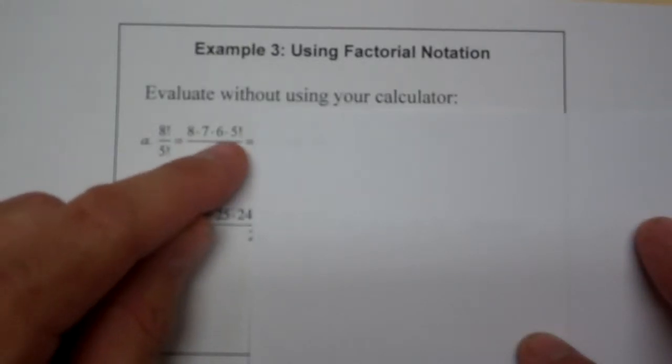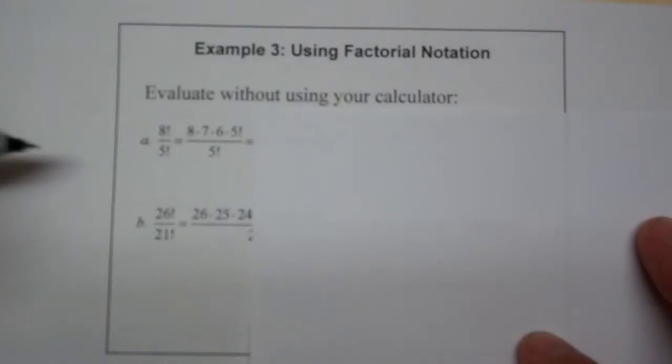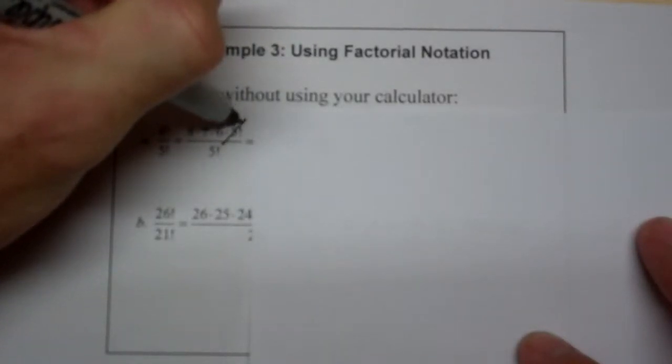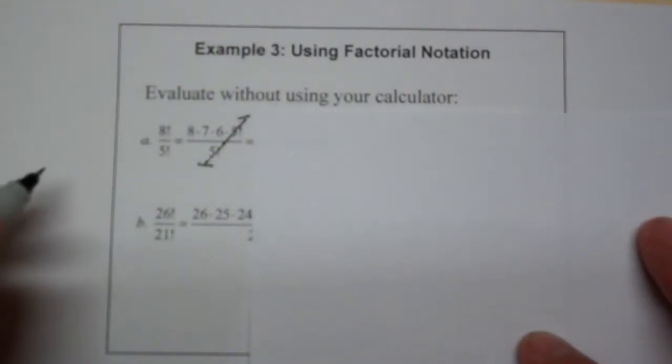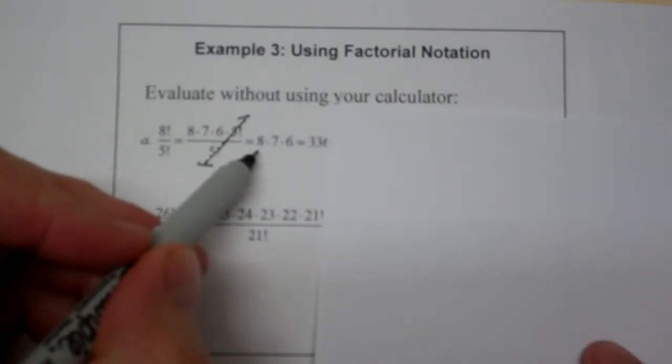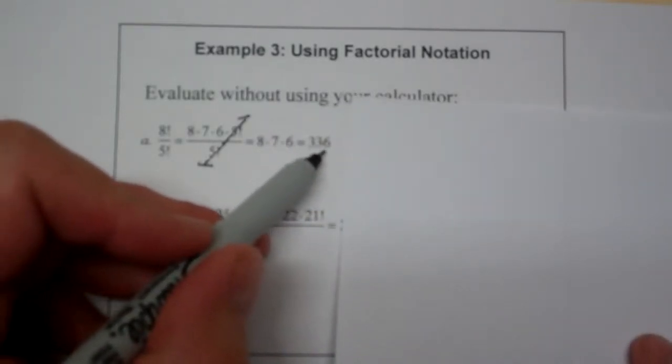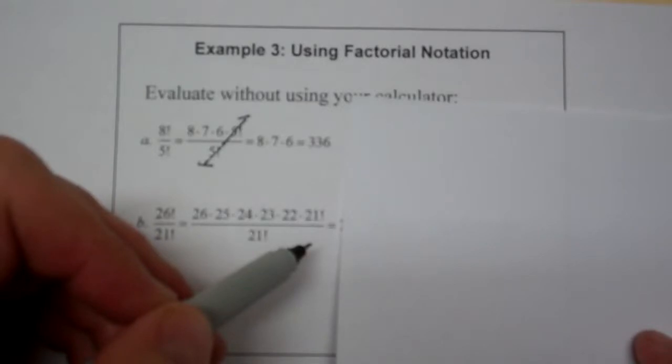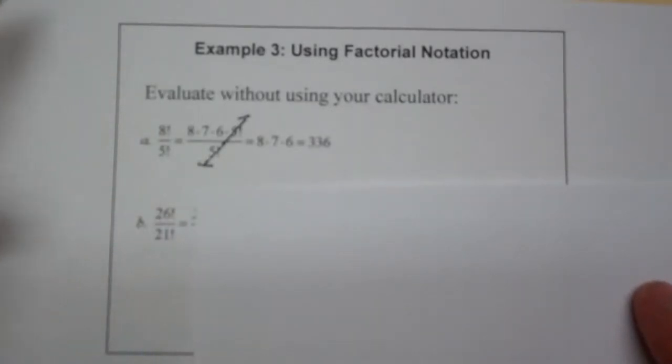Well, the idea is to turn 8 factorial into something that looks like 5 factorial so you can reduce it. And how do I do that? Well, I go 8, 7, 6, oh, 5 and put the factorial there. And then you can see that 5 factorial over 5 factorial will reduce to a 1 and simply leave you the 8, 7, 6. And you can multiply that out and get 336. The same thing happens here.